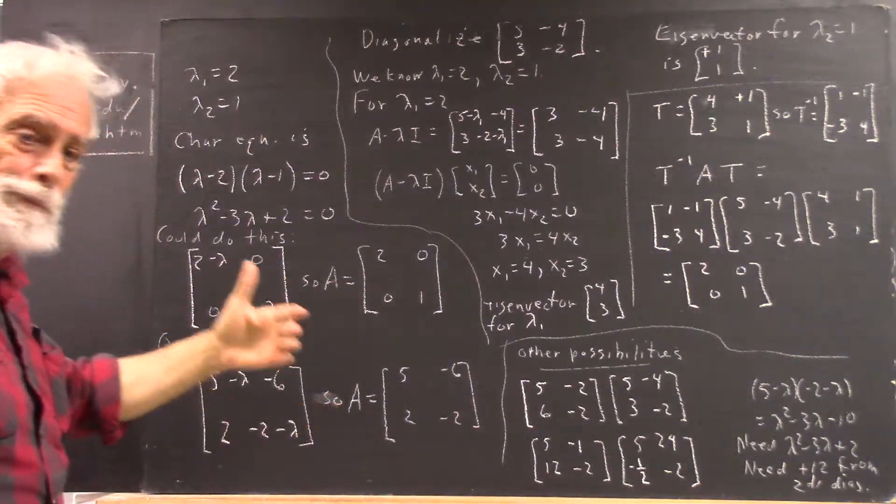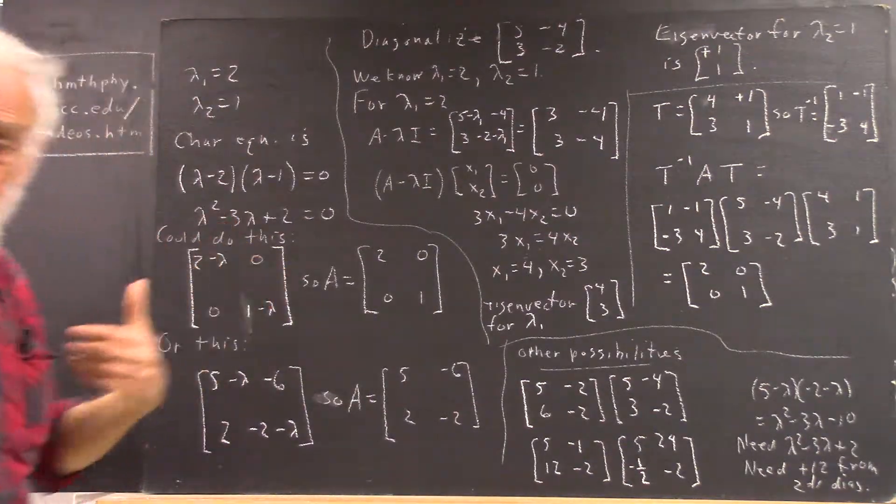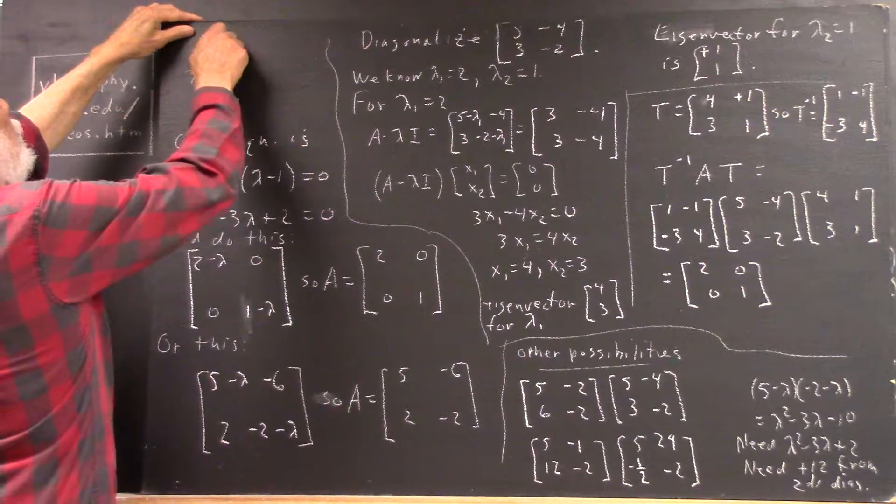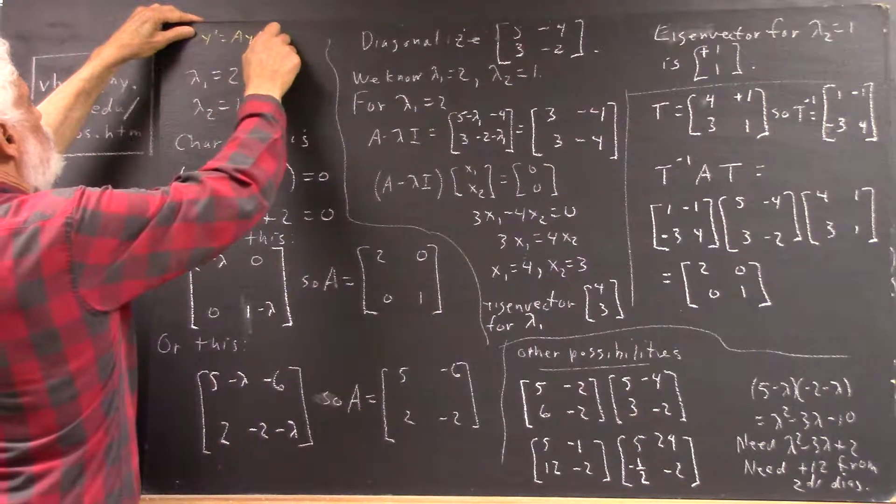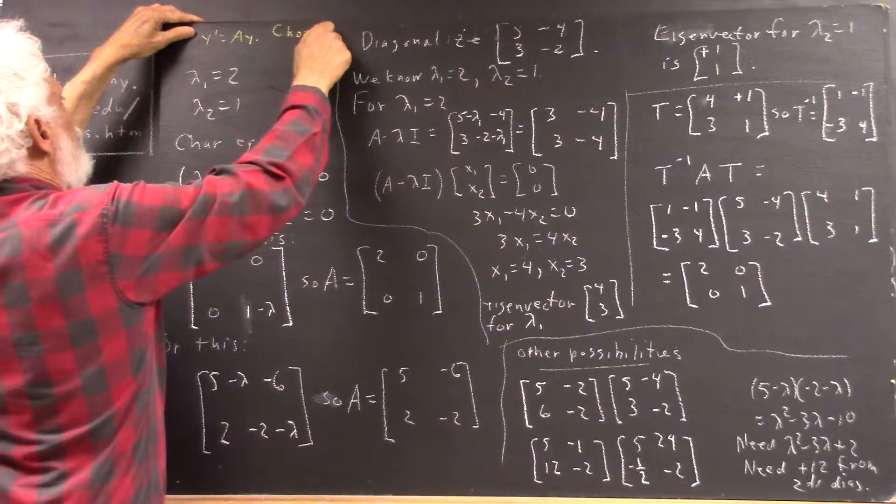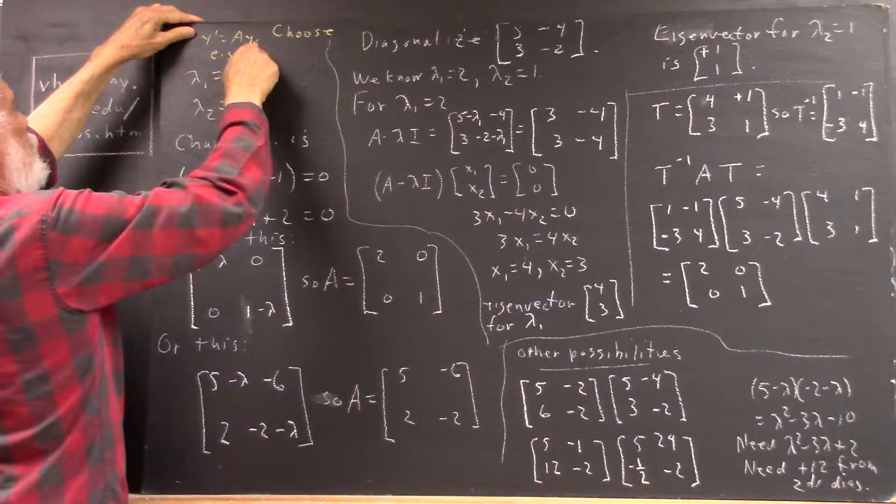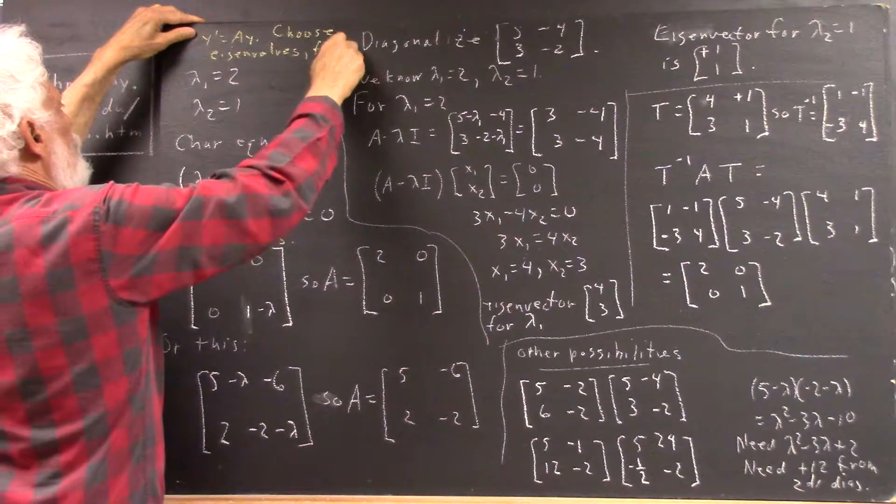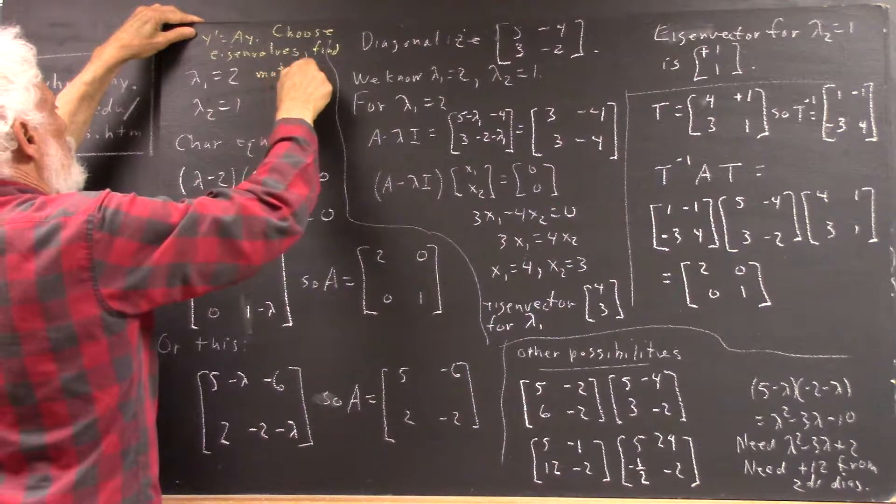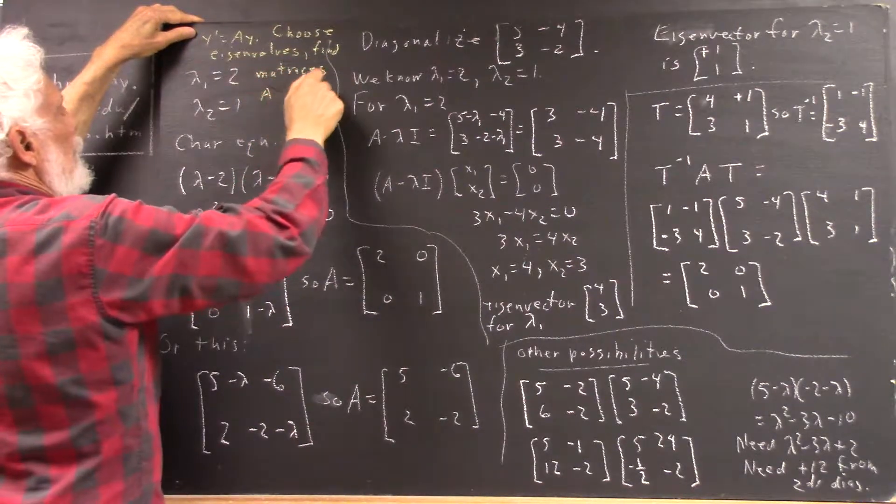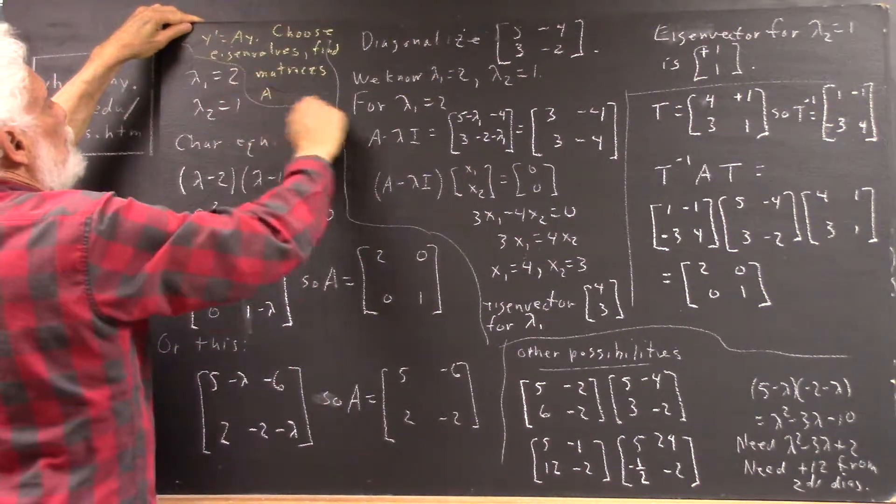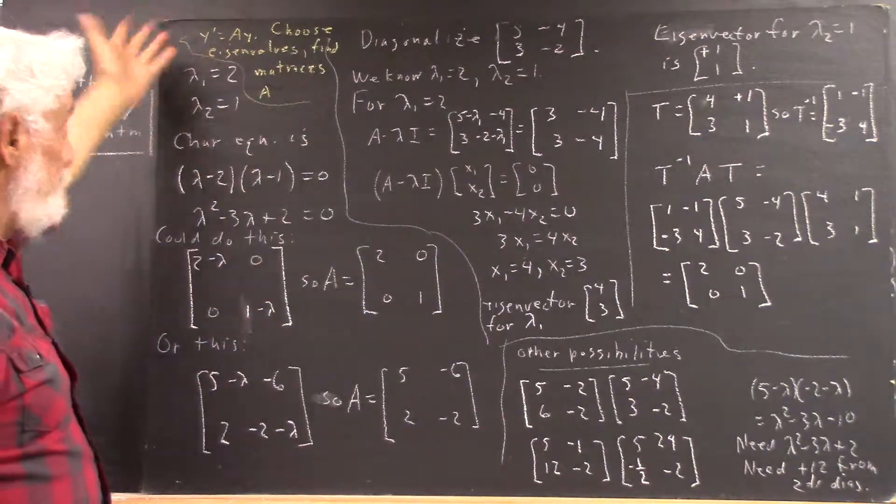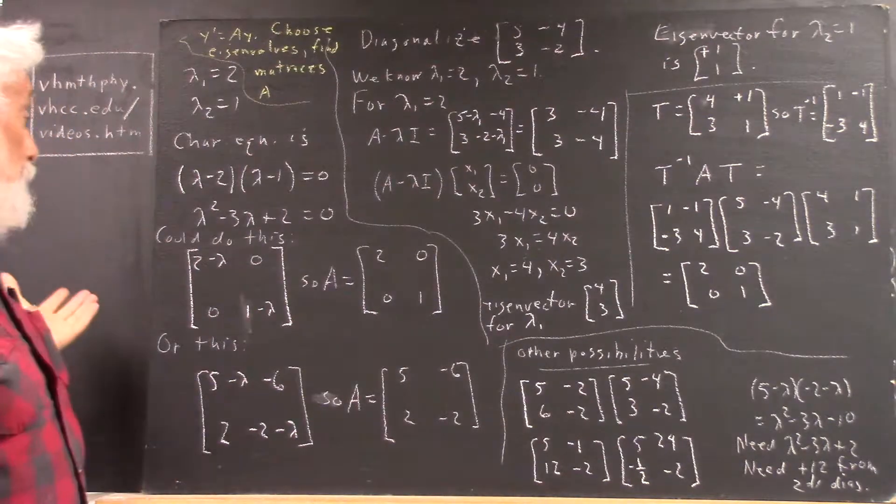Of course implicitly, we have a system Y prime equals AY. So what we're doing is we're choosing eigenvalues and we find matrices, corresponding matrices A. So there's one A matrix that would have these eigenvalues. Can we get another one? Well, sure.